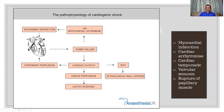The causes for myocardial damage leading to cardiogenic shock: one is infarction, two is arrhythmias, three is tamponade where the heart is not able to expand, and stenosis or rupture of the papillary muscles. Any of these can lead to shock.